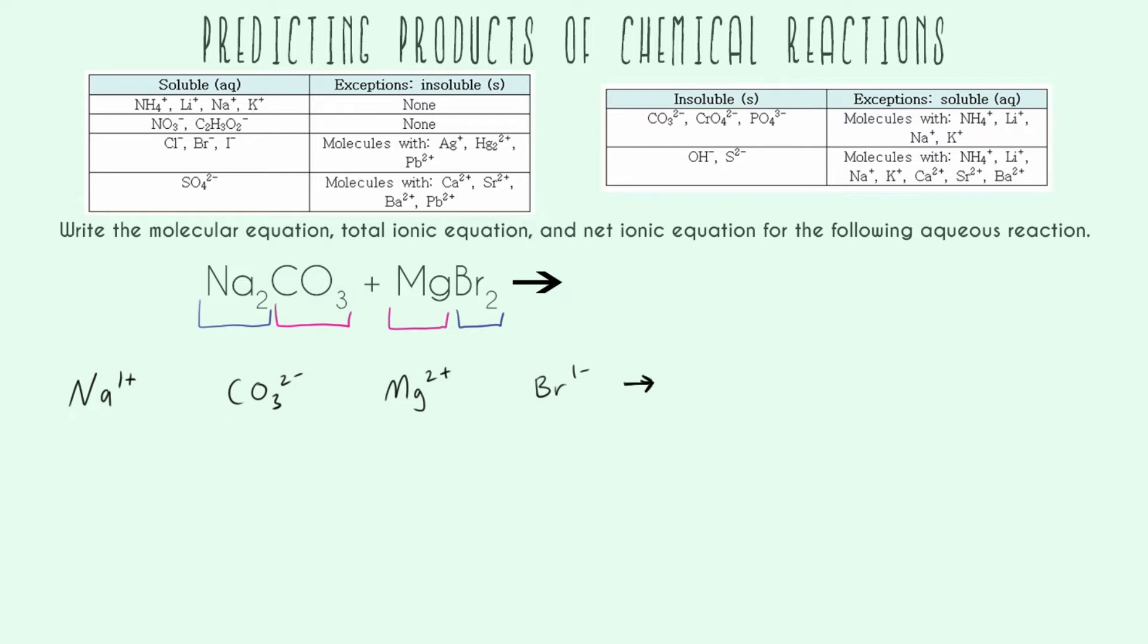So now to predict the products, you can see I've color-coded it already. You can do this a couple different ways. One, you can say that the outside goes with the outside. So sodium is going to go with bromine. And the inside goes with the inside. Carbonate is going to go with magnesium. That's a memorization way.